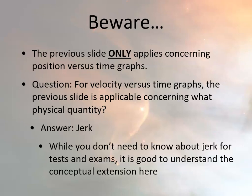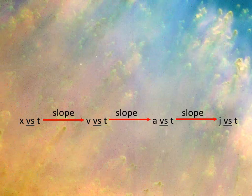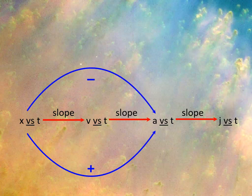Now, what if you had originally been given a velocity versus time graph and plotted those slopes to figure out acceleration? What would the happy face, sad face rule mean for a velocity versus time graph? Since the slope of a velocity versus time graph is acceleration, using the happy face, sad face rule on a velocity versus time graph would tell you whether the jerk is positive or negative. Remember, jerk is the rate at which acceleration changes. So: from position to velocity, take the slope. From velocity versus time to acceleration, take the slope. From acceleration versus time, take the slope to get jerk. You can skip over one level by using the happy face, sad face rule.